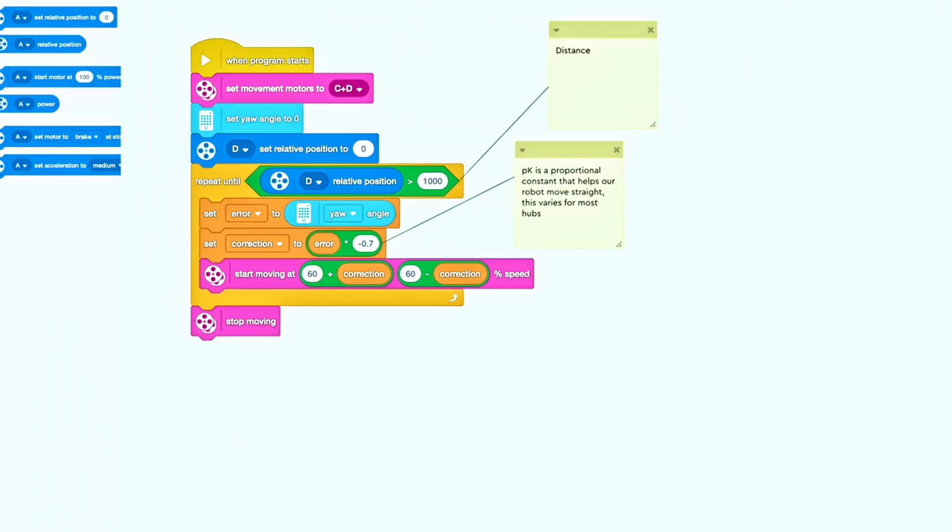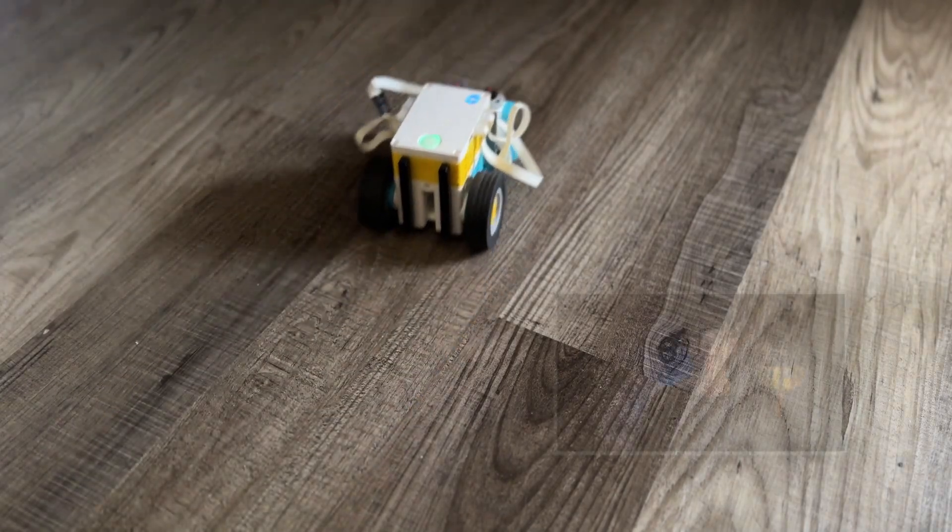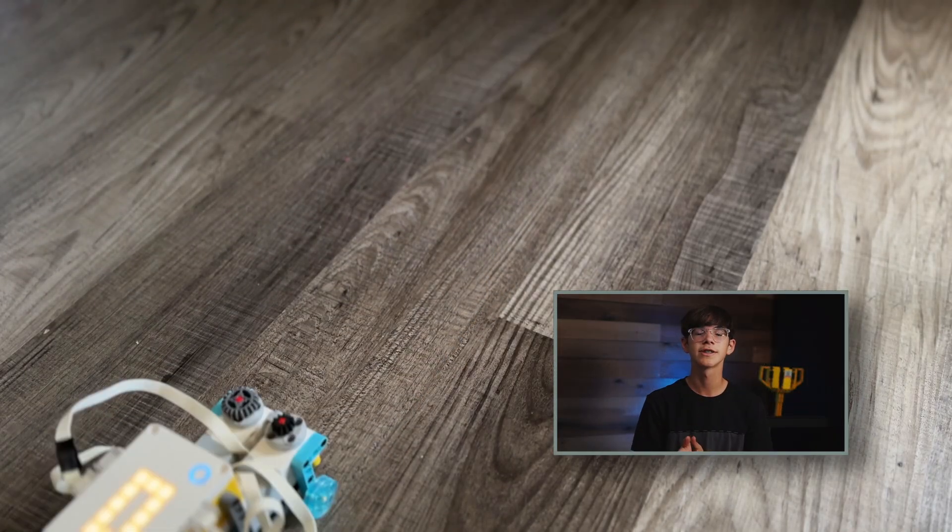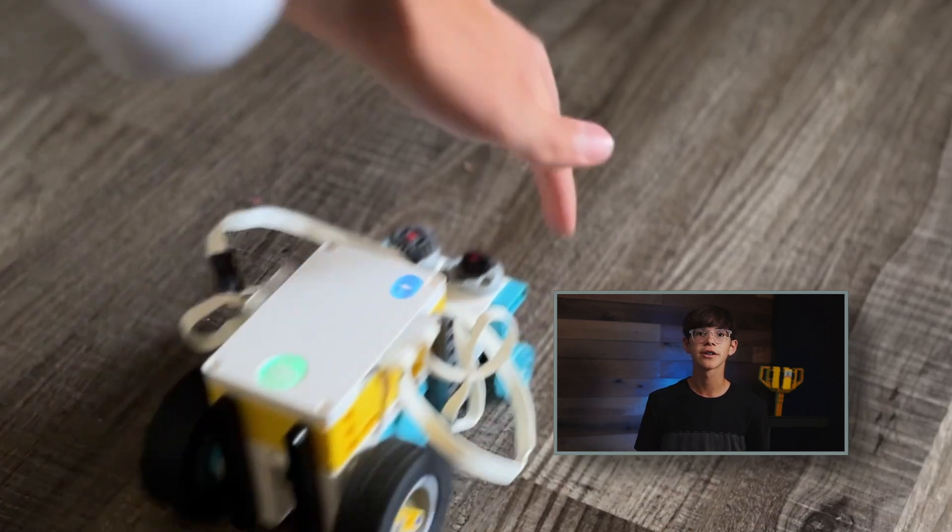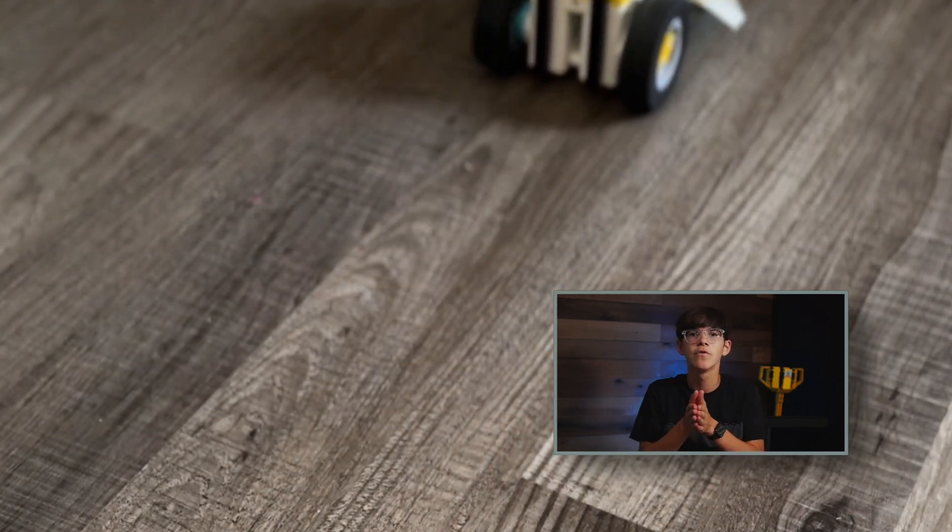With our code ready, upload it to our robot and click start. Watch as your SPIKE Prime robot moves in a straight line, how it adjusts to keep moving in that straight line and accomplish this goal, making real-time adjustments to stay on course.